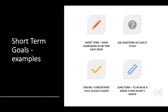Here are some examples of short-term goals. This particular student has set himself a long-term goal of achieving a grade A pass in National 5 Maths. That target is at the end of the year, so what are they going to do each day and each week to get there? They're going to set a series of short-term goals — for example, turning up to class on time, handing in homework on time every week, asking questions when stuck in class, and fully concentrating in each lesson. These are short-term targets to ensure they're on track to meet their long-term goal of a grade A pass.